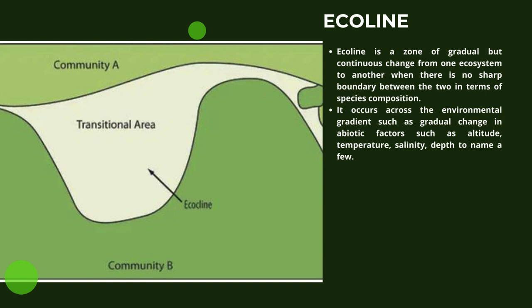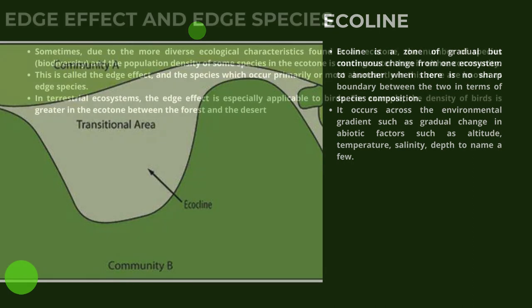Now let us look at ecocline. An ecocline is a zone of gradual but continuous change from one ecosystem to another when there is no sharp boundary between the two in terms of species composition. It occurs across environmental gradients such as gradual change in abiotic factors such as altitude, temperature, salinity, and depth, to name a few.